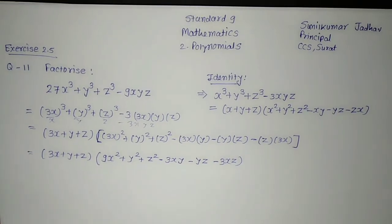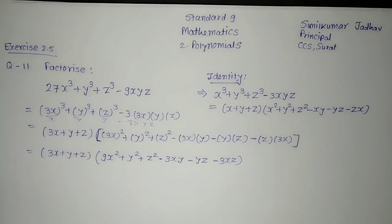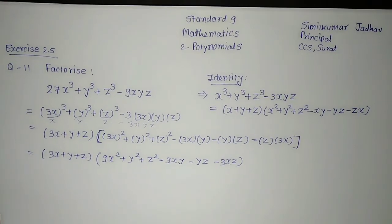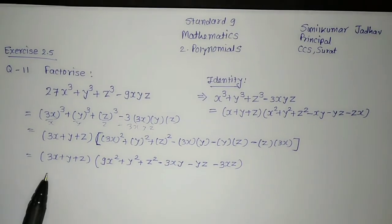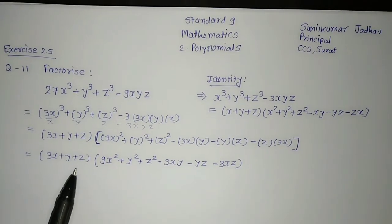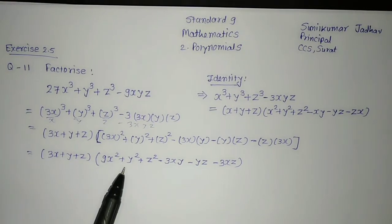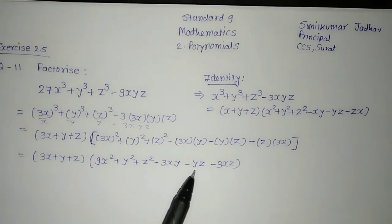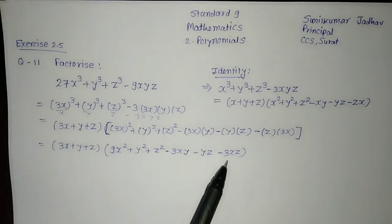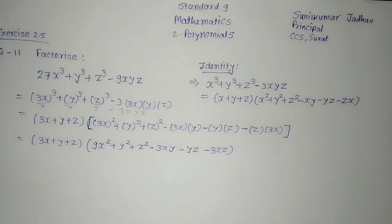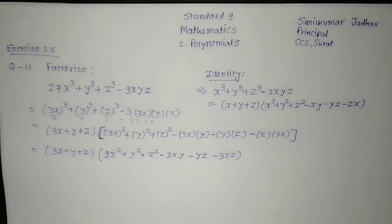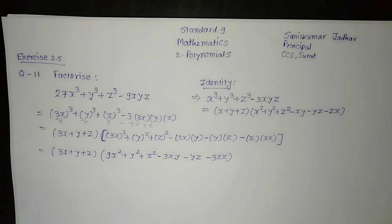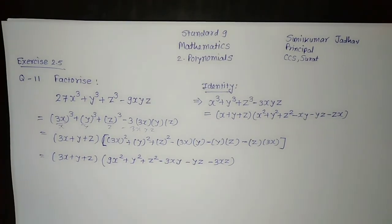This is how you can do the factorization of 27x³ plus y³ plus z³ minus 9xyz. The final answer is (3x + y + z)(9x² + y² + z² minus 3xy minus yz minus 3zx). I hope you understand this. If you really like this video, click on the like button and share with your friends. Thank you so much.